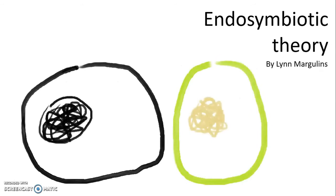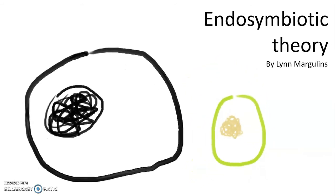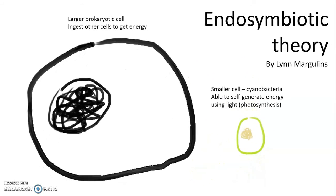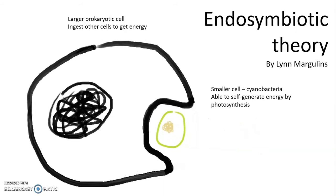Once upon a time, there were these ancient prokaryotic cells. The smaller one is called cyanobacteria. It is able to self-generate energy using light, while the larger one is unable to make its own food, so it ingests other cells to get energy. And one day, the larger cell engulfed the smaller cell.